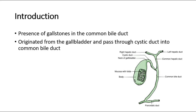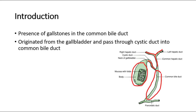This picture shows the anatomy of the structures near the gallbladder. This is the gallbladder, the neck of the gallbladder, connected to the cystic duct. At the upper part, there is the right hepatic duct and left hepatic duct originating from the liver, combining to form the common hepatic duct. The cystic duct from the gallbladder combines with the common hepatic duct to form the common bile duct. When there are gallstones inside the common bile duct, this condition is called Choledocholithiasis — 'choledocho' referring to the common bile duct and 'lithiasis' referring to gallstones.